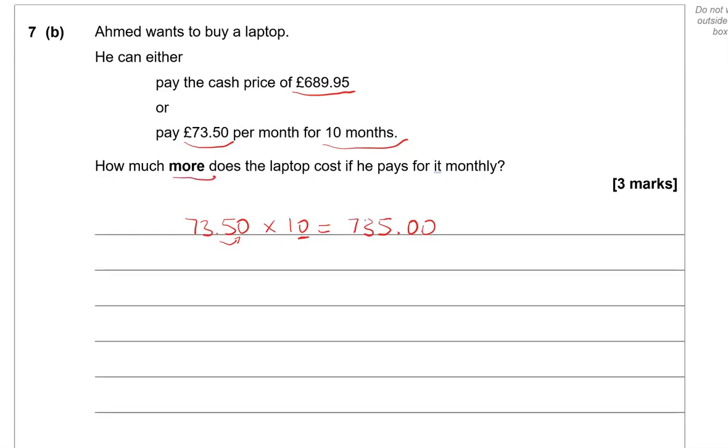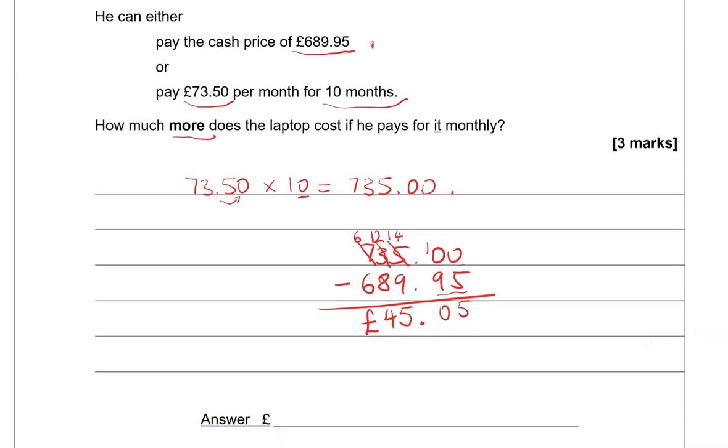Now the question is how much more does the laptop cost if he pays for it monthly. So this is if he pays for it monthly. And I'm going to compare it to this. So what I'm going to do is 735.00 take away 689.95. So we've got to take away 95 pence from zero. So we're going to borrow a pound from this. So this becomes 4 and that is worth 100 pence. So 100 take away 95 gives us 5 pence. Now we've got to take away 9 from the 4. Again, we've got to borrow 1. So this becomes 14, take away 9 gives us 5. 2 take away 8, means again, we need to borrow 1. So this is 6 and this becomes 12. 12 take away 8 gives us 4. 6 take away 6 is 0. So £45.05.